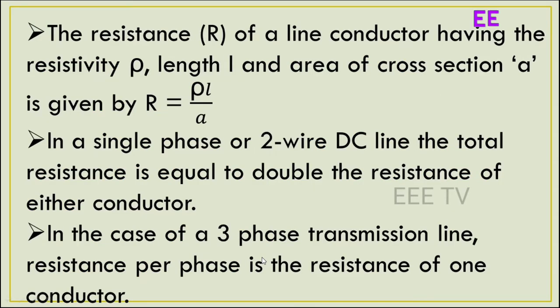The resistance of a line conductor having the resistivity, length, and area of cross section is given by the formula. The resistance is determined by the resistivity, length, and area.